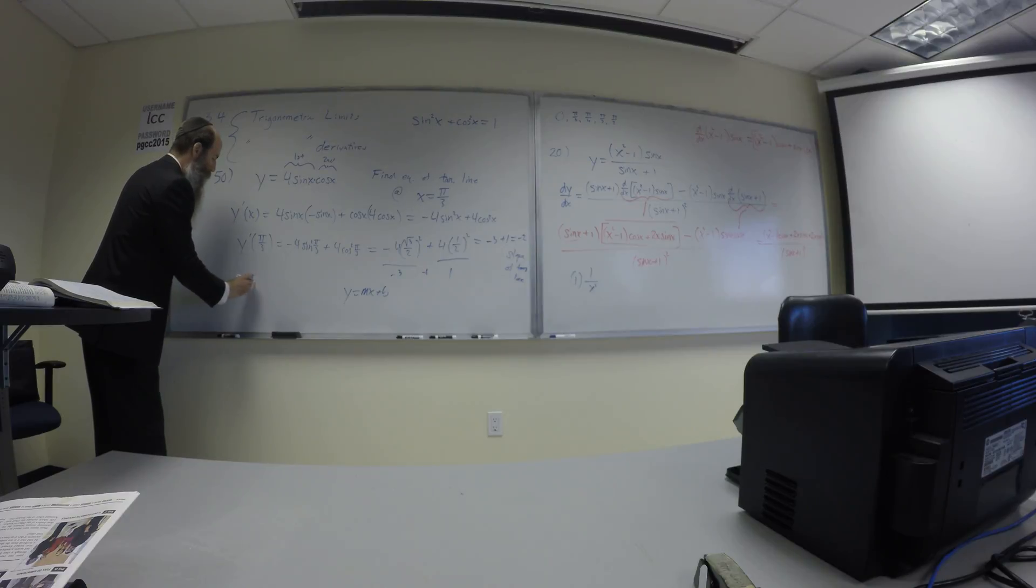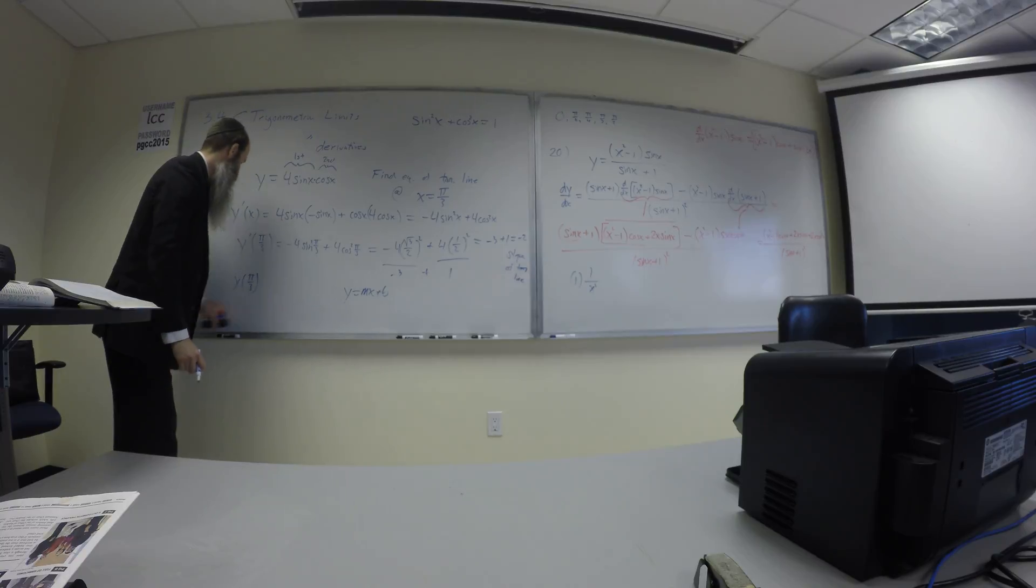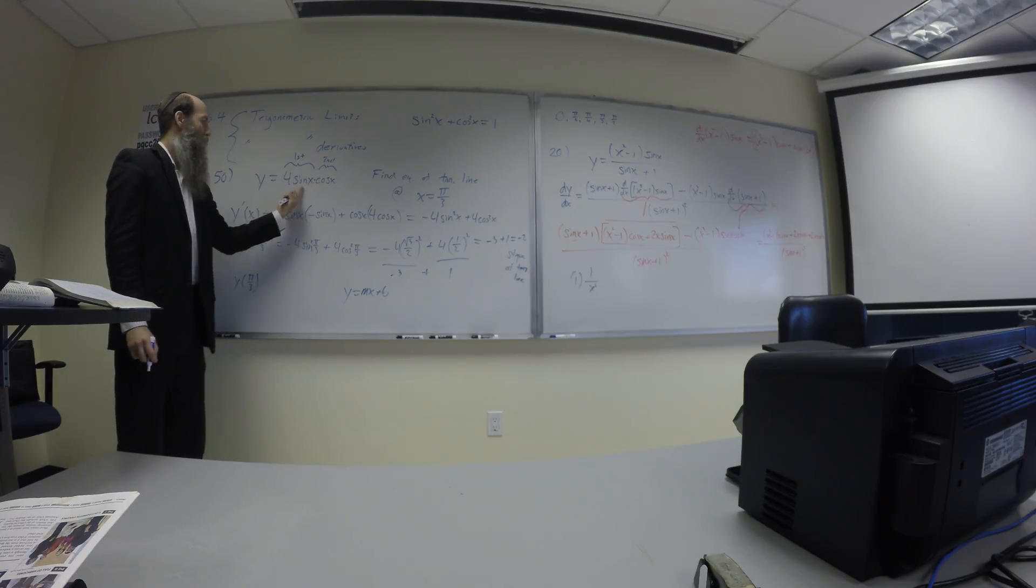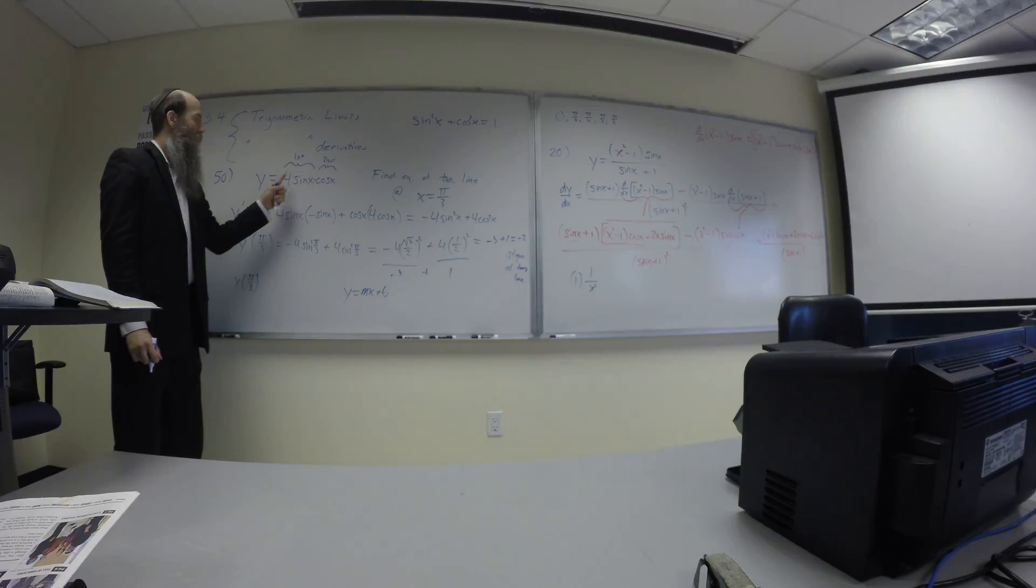The original function had pi on 3, so you have a point that's on the tangent line. So what's y of pi on 3? Just go back here, plug in pi on 3. Sine of pi on 3 is already root 3 on 2, and cos of pi on 3 is a half.